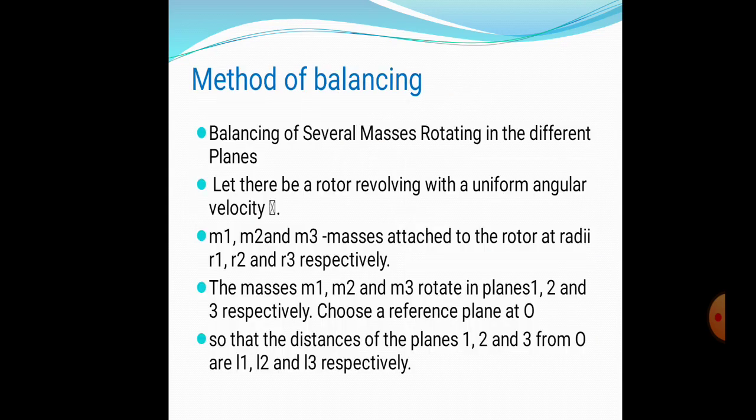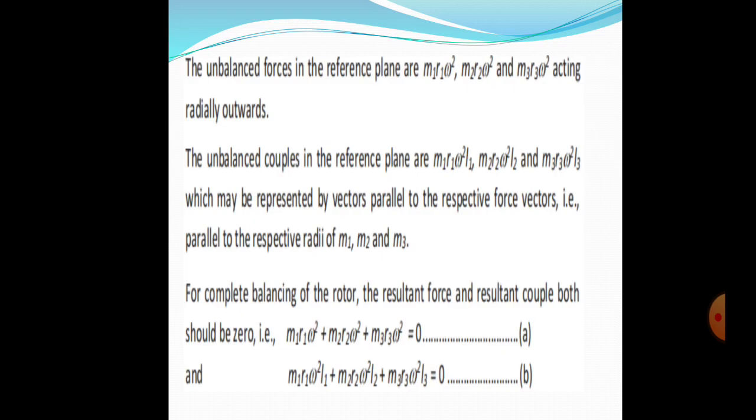Method of balancing: m1, m2, m3 are the masses; r1, r2, r3 are the respective radii; θ1, θ2, θ3 are the respective angles; l1, l2, l3 are the distances of masses m1, m2, m3 from the reference plane.